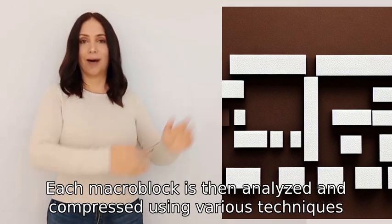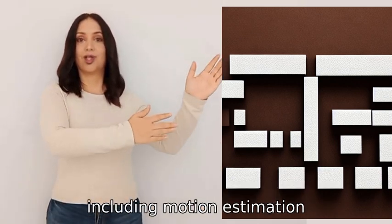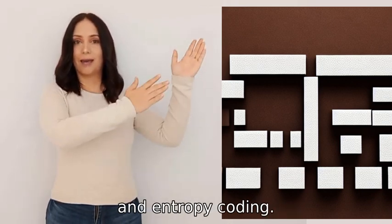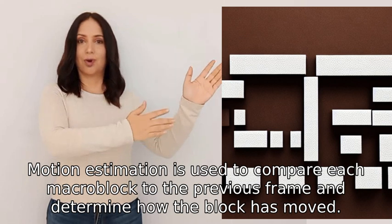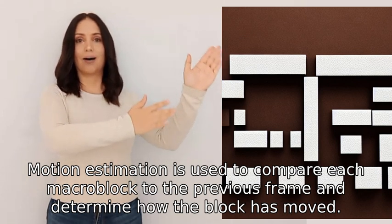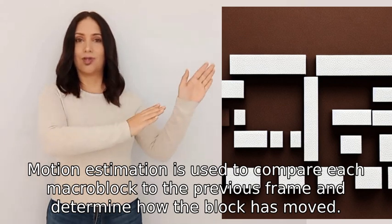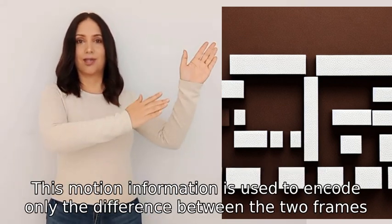Each macroblock is analyzed and compressed using various techniques, including motion estimation, variable length coding, and entropy coding. Motion estimation is used to compare each macroblock to the previous frame and determine how the block has moved.